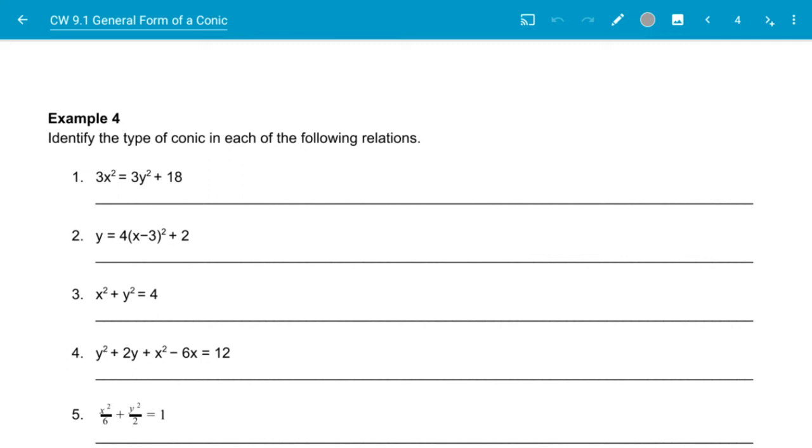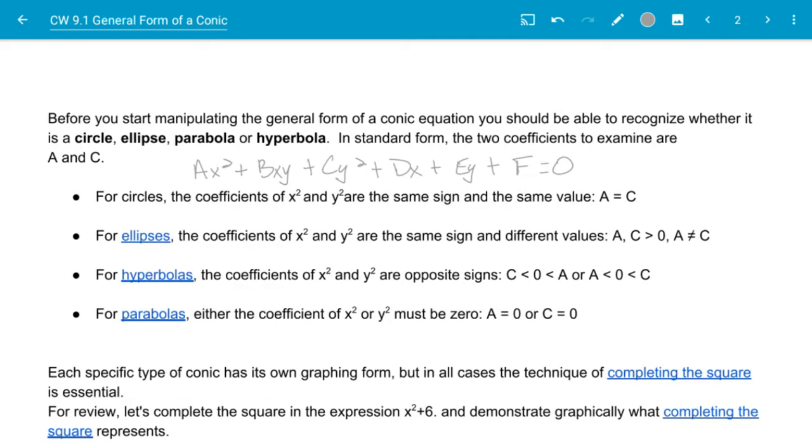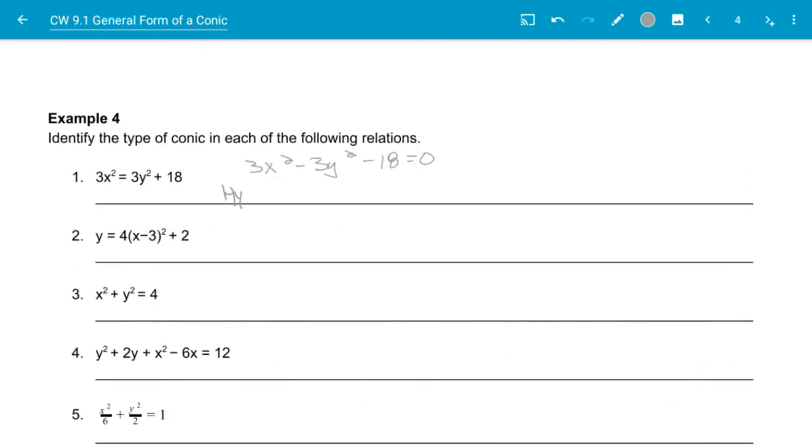So when we take a look at this, this is not in standard form. If I put this into standard form, it would be 3x squared minus 3y squared minus 18 is equal to 0. And here I have x squared and the y squared. I have the two squares being different, being opposite signs. So if I look back over here, when I have the x squared and the y squared, and they have opposite signs, then we have a hyperbola. So the first one there is a hyperbola.